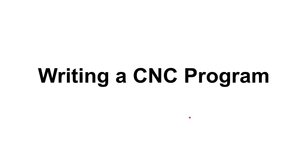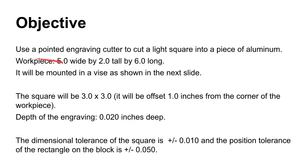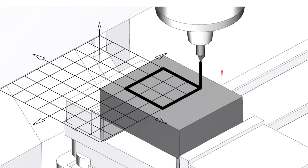We're ready to look at writing a CNC program. We'll start with an example: take a piece of aluminum that's five inches wide, two inches tall, six inches long, mounted in a vise. We're going to take an engraving tool and scratch a square in that block. The engraving will be twenty thousandths of an inch deep, and we've given ourselves generous tolerances.